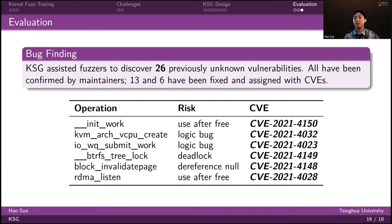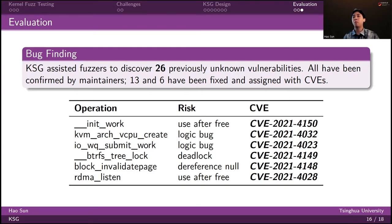Finally, the most important goal of our tool is to improve the bug-finding capability of the kernel fuzzer. To evaluate this, we also take the generated specifications as input to the fuzzer. As a result, KSG assisted the fuzzer in discovering 26 previously unknown vulnerabilities. All bugs have been confirmed by the corresponding maintainers, 30 bugs have already been fixed, and 6 bugs have already been assigned CVEs. This table shows the detailed information about the CVE IDs we obtained, and many of them are very critical.